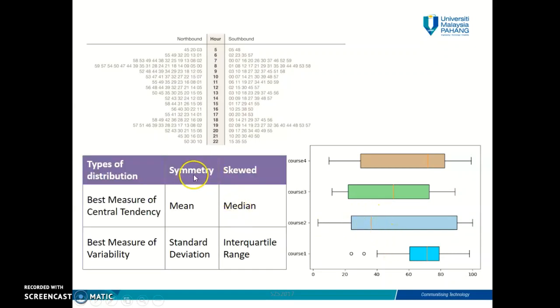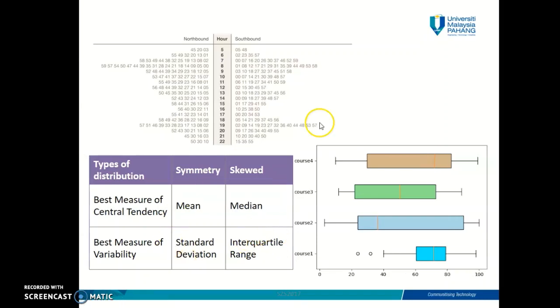For example, if you have a symmetric distribution, the best measure of central tendency to use for your data is mean. And the best measure of variability is standard deviation. But if your data is skewed, then the best central tendency is median, while the best measure of variability is interquartile range. So what type of data would most likely have a skewed distribution? Well, a data set that has outliers would most of the time be skewed.